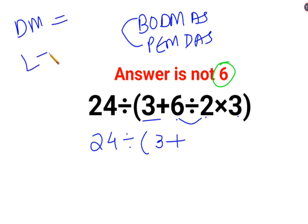So the order which needs to be followed is going from left to right. So first, you should have done 3 plus kept as it is, 6 divided by 2 is 3 multiplied by 3.